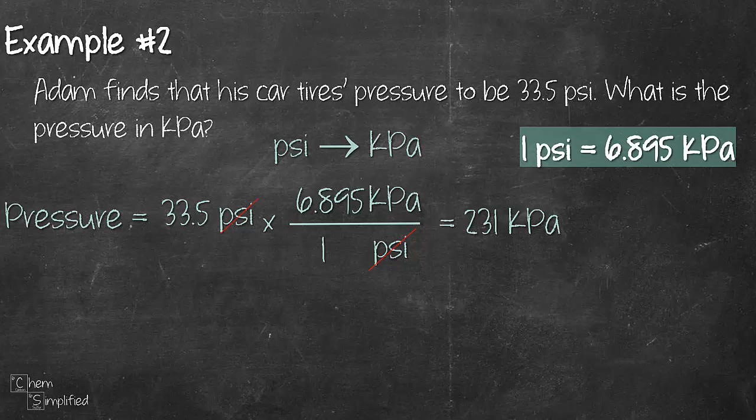So you might be wondering for the conversion factor must the bottom value always be 1? The answer is no. As long as you set it up in a way where the units cancel off you can plug in any value for the conversion factor. Here's what I mean.